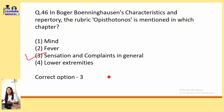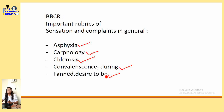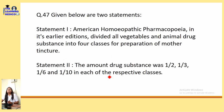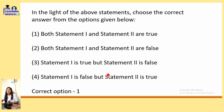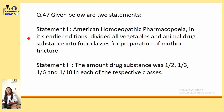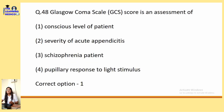Two statements about American Homeopathic Pharmacopoeia: in its earlier edition it divided all vegetable and animal drug substances into four classes for preparation of mother tincture, and the amount of drug substance was 1/2, 1/3, 1/6, and 1/10 in each of the respective classes. Both statements 1 and 2 are correct. No additional reference was available for this.